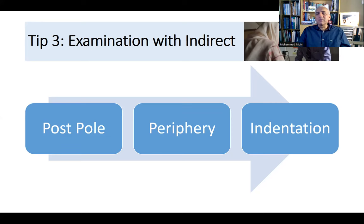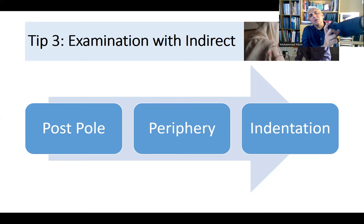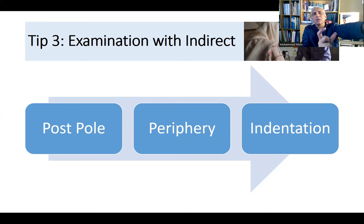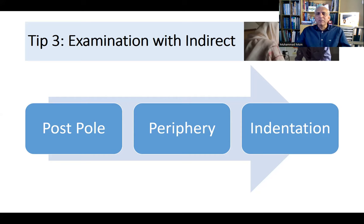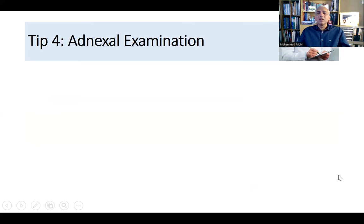Indentation: if you can't find a hole, ask the examiner, but be prepared to do it. Indent from outside the lid, be gentle, and align your indirect with your indenting hand — where your hand is, your indirect needs to be, and your lens needs to be in that line as well. This is especially important in patients with peripheral holes.